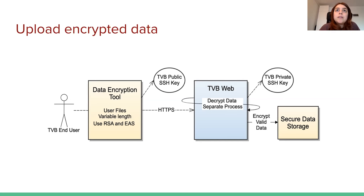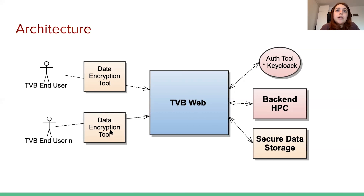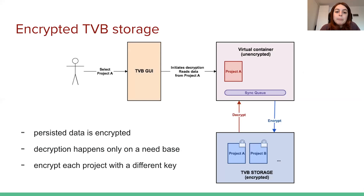We have the public key available at a URL and we also have a Jupyter notebook that helps users encrypt data in order to simplify the process. After the upload is finished, the TVB backend decrypts that data and parses it in order to store it in TVB storage. This is the second box where we need to ensure that data is secured. The main idea here is that the data storage is always encrypted in an OpenShift volume and decryption happens only on a need basis.